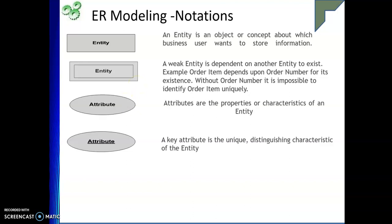Next we have an attribute. Attribute is represented with an oval shape, and you write the name of the attribute inside the oval. Whenever you have a key attribute, you need to underline the name of the attribute. For example, if your attribute is student ID, you underline it, and it becomes a key attribute.